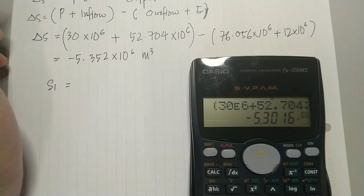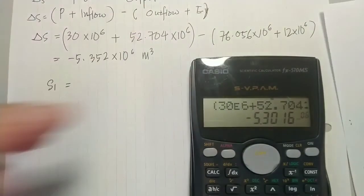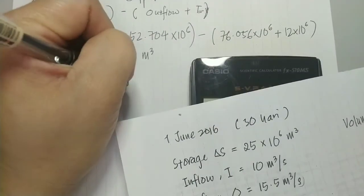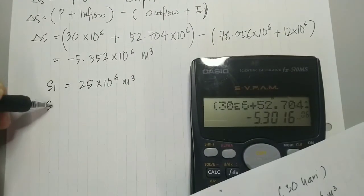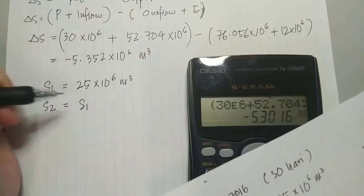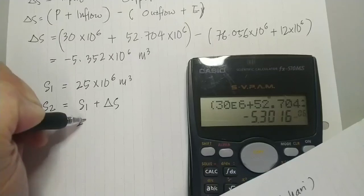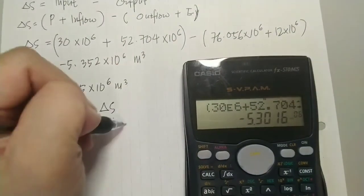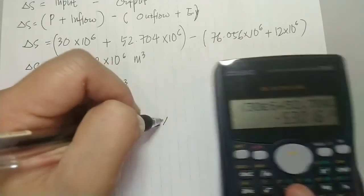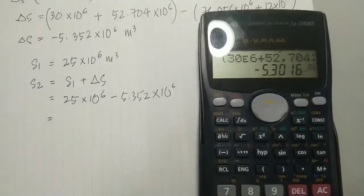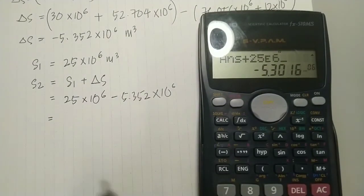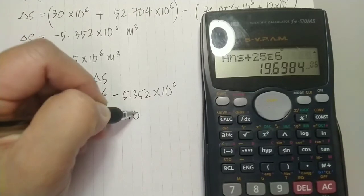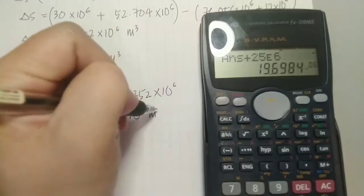The initial storage S₁ = 25×10⁶ m³. The new storage S₂ = S₁ + ΔS. Since ΔS is negative (approximately −5.3×10⁶ m³), the storage decreases. Therefore, S₂ = 25×10⁶ − 5.3×10⁶ = 19.6×10⁶ m³. This is the storage at the end of July.